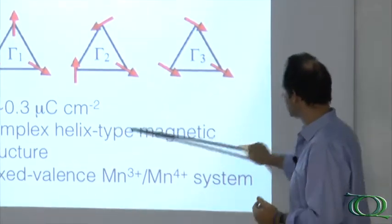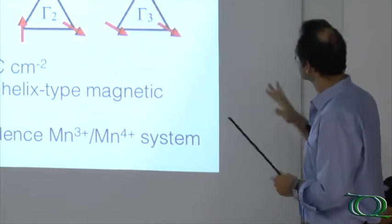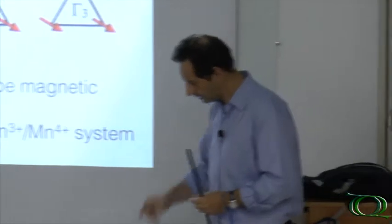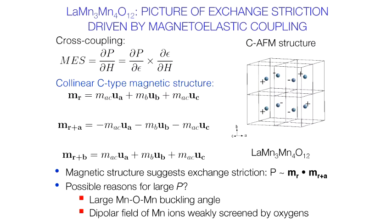So it's a complex helix-type magnetic structure, and also there is charge ordering. In this case it's difficult to guess which is the mechanism underlying the improper ferroelectricity. Here we have a picture of exchange striction driven by magneto-elastic coupling. We recall the expression for the cross coupling between strain, magnetic field, and the ferroelectric order parameter.